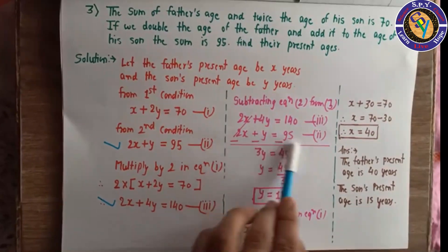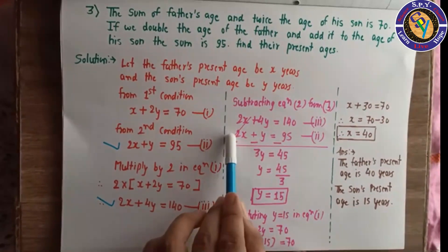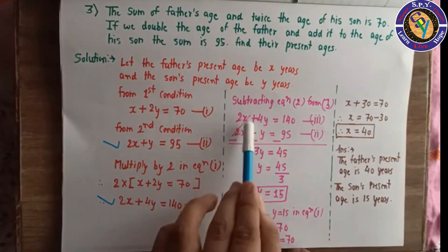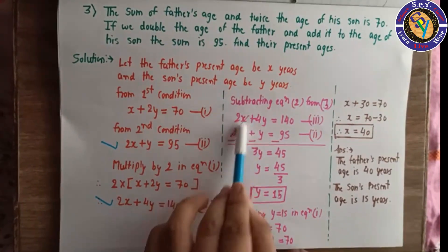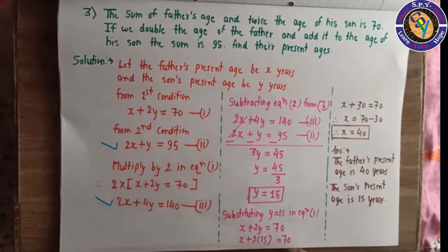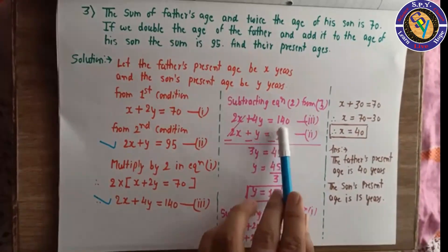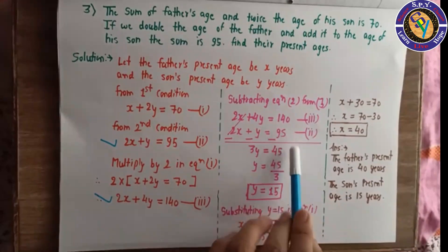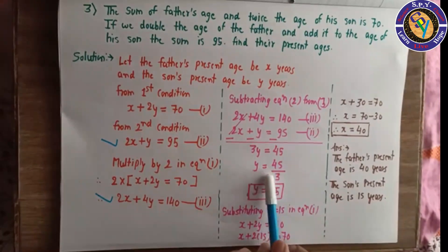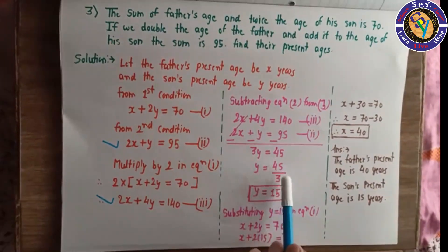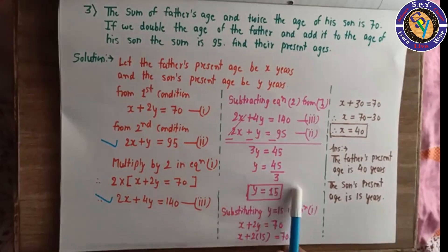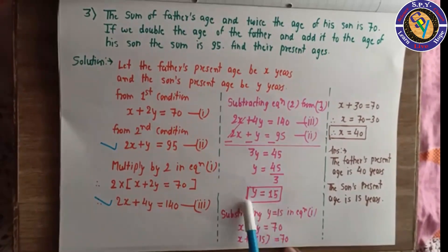Multiply equation 1 by 2 to get 2x plus 4y equals 140, which is equation 3. Subtract equation 2 from equation 3: 2x cancels, 4y minus y gives 3y, and 140 minus 95 equals 45. So 3y equals 45, therefore y equals 15.